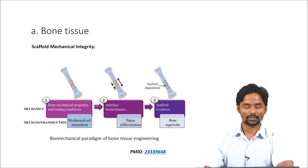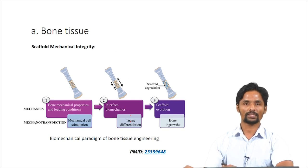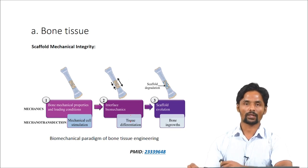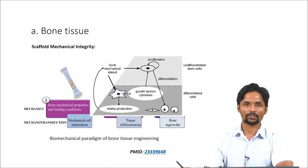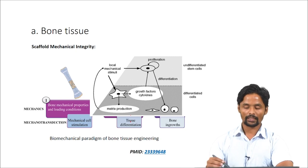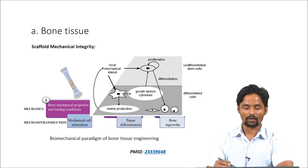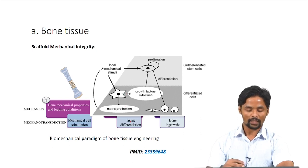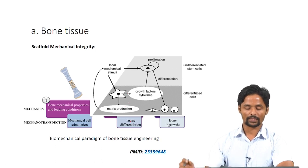The second step is that the mechanical property of the scaffold should be such that it induces scaffold-to-bone mechanotransduction. Mechanical stimulus provided by the scaffold induces tissue differentiation. In undifferentiated stem cells, the mechanical stimulus causes differentiation of the cells, whereas in differentiated cells it leads to matrix production by the differentiated cells.